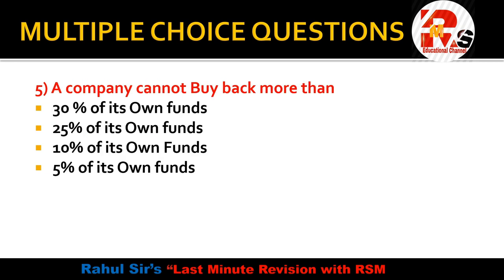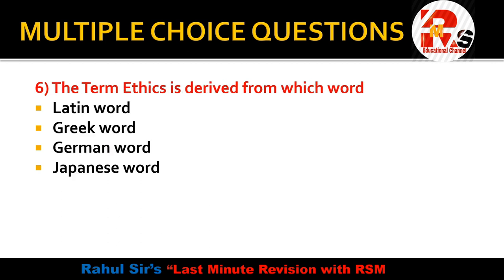Question number 5: A company cannot buy back more than — 30%, 25%, 10%, or 5% of its own funds? I hope you all know the answer. The right answer is 25% of its own funds. A company cannot buy back more than 25% of its own funds.